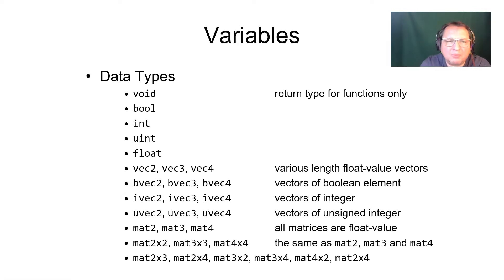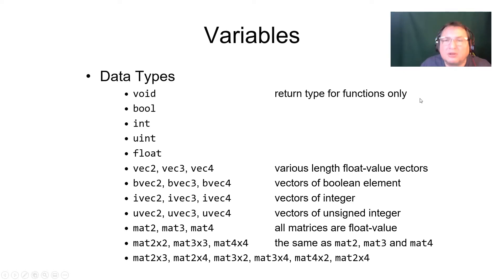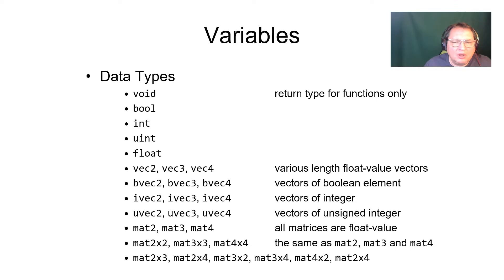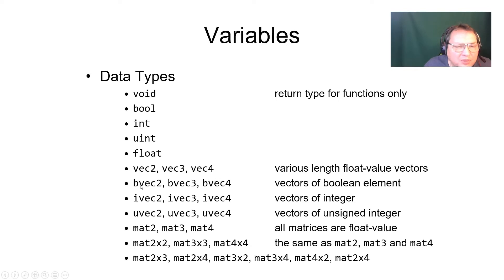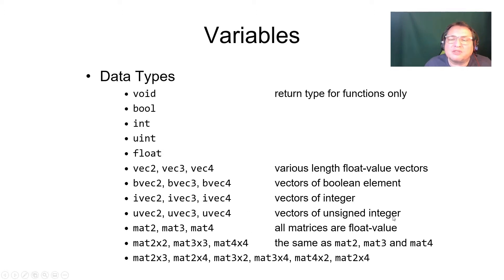Data types are roughly based on C. We have void, which can only be used as the return type for functions meaning no return value. We also have bool, int, uint (unsigned), and float. GLSL doesn't have a double data type, but it has built-in vectors: two-, three-, and four-dimensional — vec2, vec3, vec4. By default these are float vectors, but you can also have boolean vectors (bvec2, bvec3, bvec4), integer vectors (ivec), and unsigned integer vectors (uvec). Two, three, and four refer to the dimensionality of these vectors.